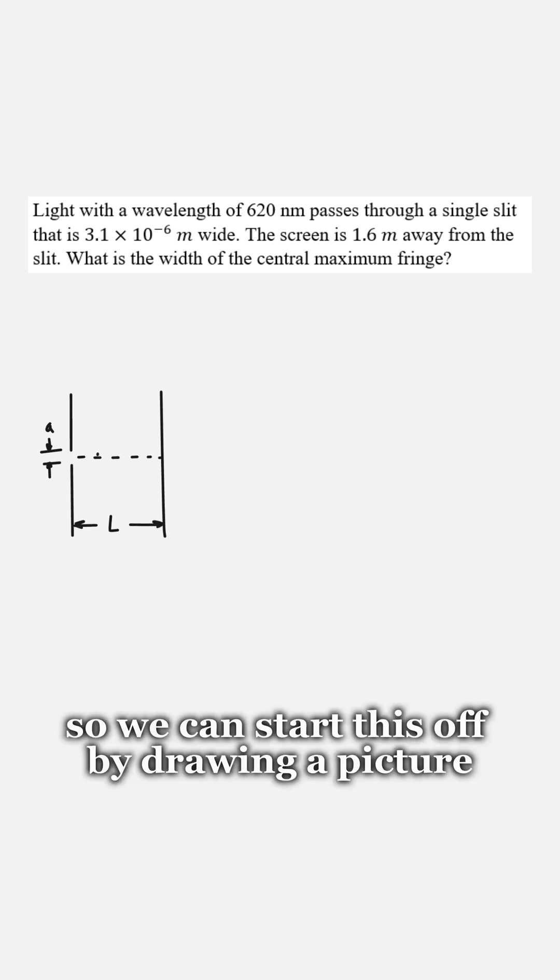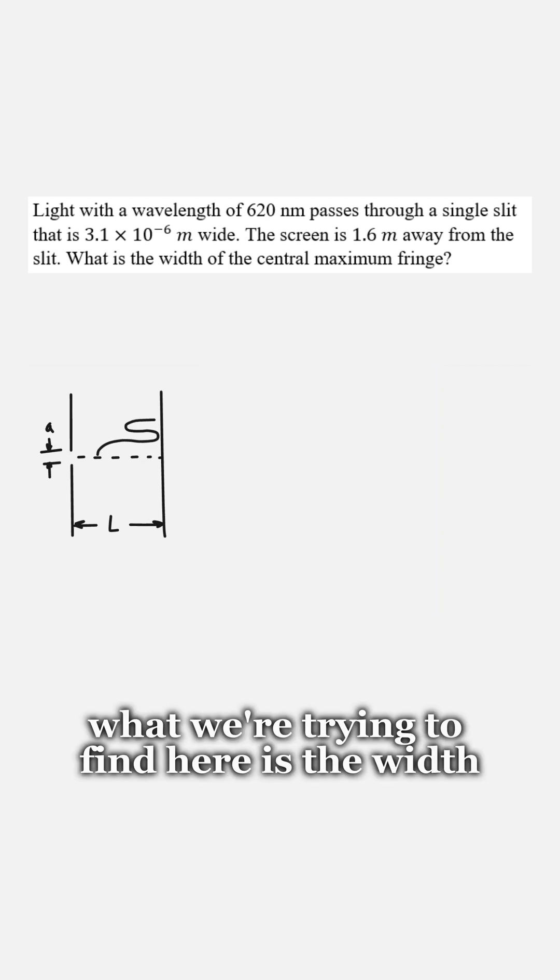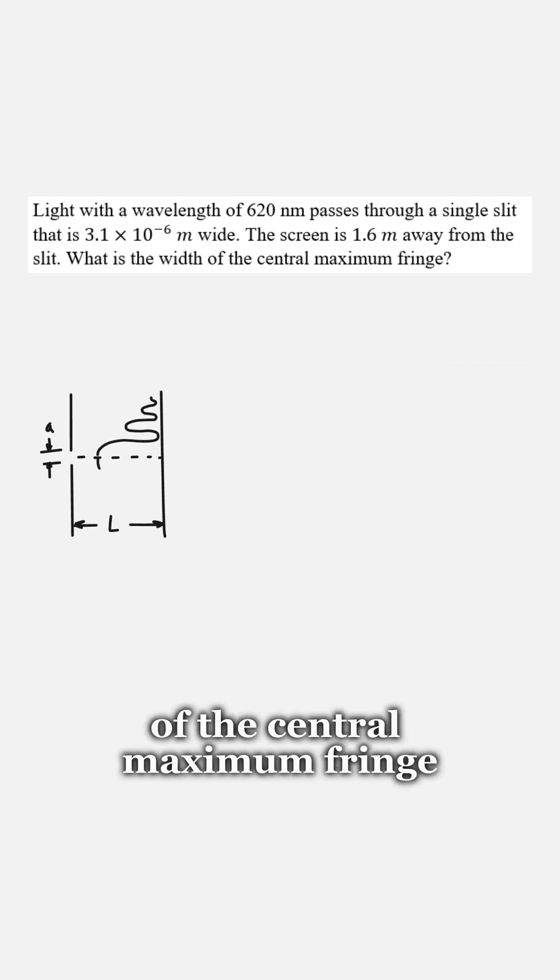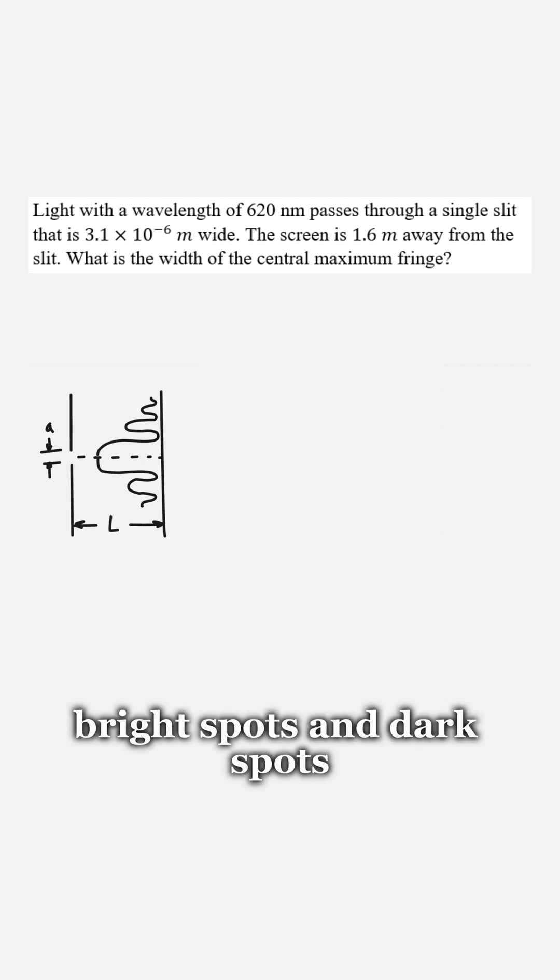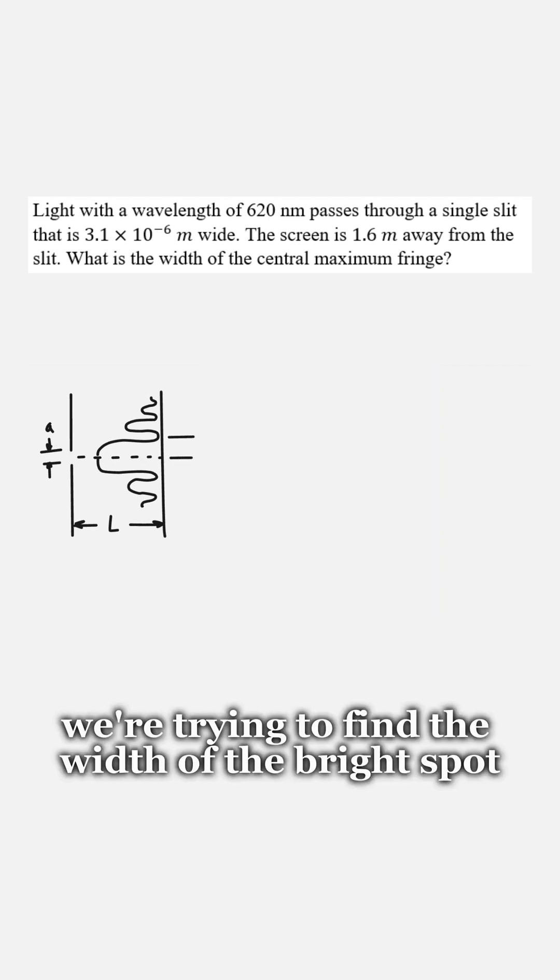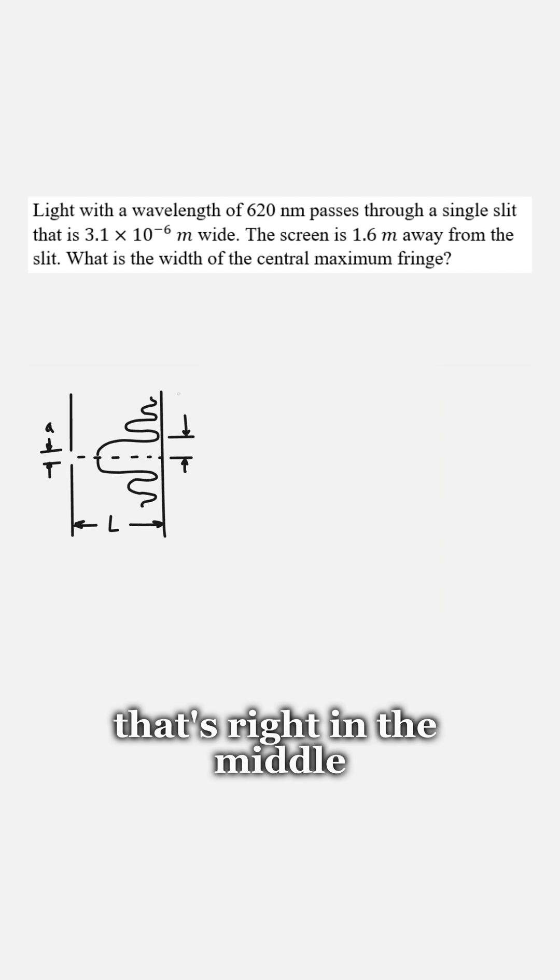So we can start this off by drawing a picture. What we're trying to find here is the width of the central maximum fringe. So all of that means is that on the screen there's gonna be bright spots and dark spots. We're trying to find the width of the bright spot that's right in the middle.